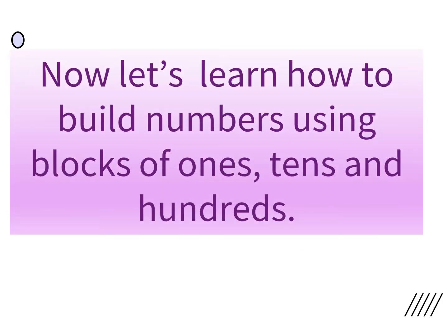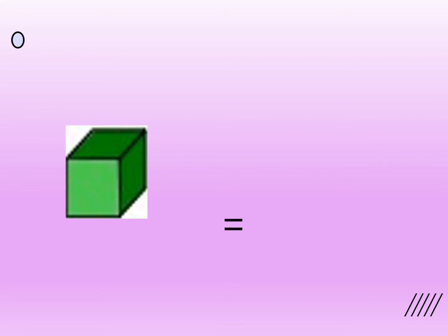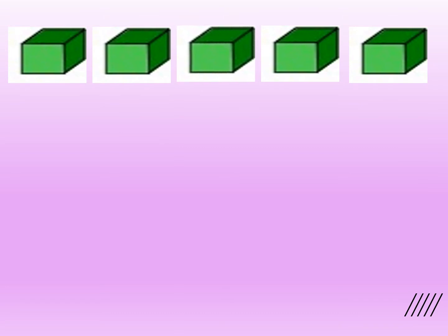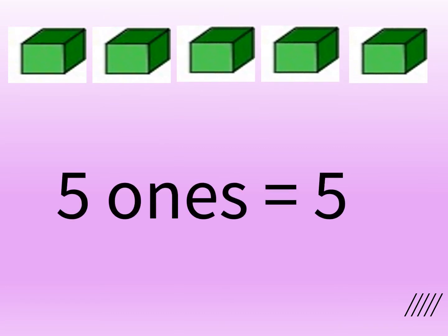Now let's learn how to build numbers using blocks of 1s, 10s and 100s. This green block represents 1. Since we know that one green block represents 1, let's count the number of 1s on the screen: 1, 2, 3, 4 and 5. 5 ones make the number 5.